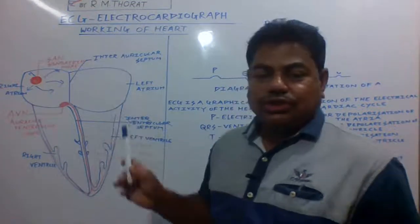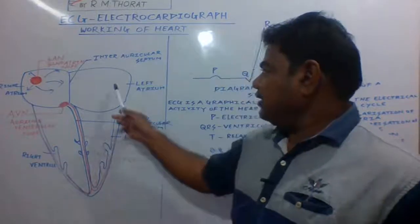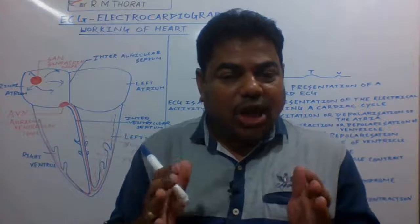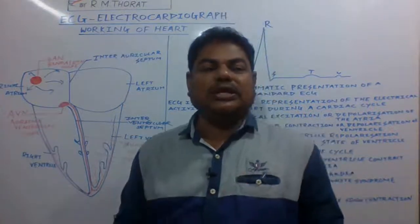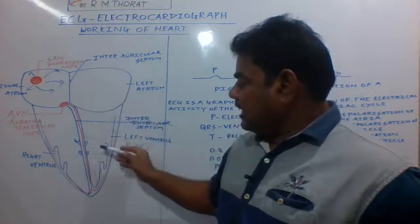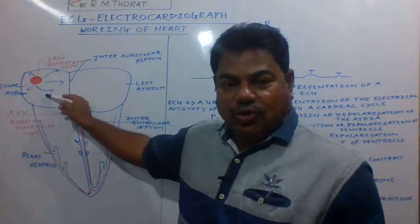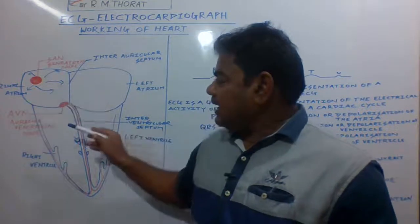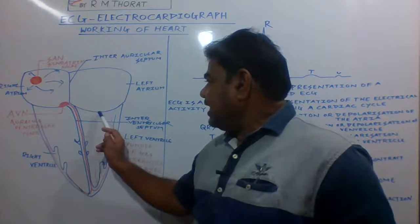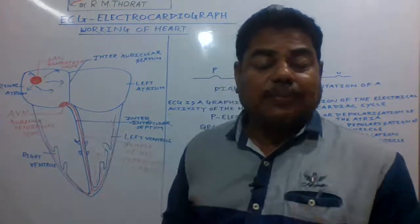The left atrium receives oxygenated blood, and the right atrium receives deoxygenated blood in which carbon dioxide is present. Oxygenated blood gets forced into the left ventricle, and deoxygenated blood gets forced from the right atrium into the right ventricle. In between the left and right chambers, the auricle and ventricle walls are present.